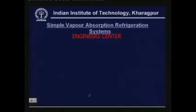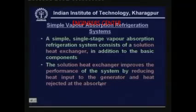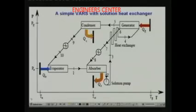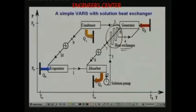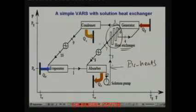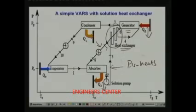A simple single-stage vapor absorption refrigeration system consists of a solution heat exchanger in addition to the basic components. The solution heat exchanger improves performance by reducing heat input to the generator and heat rejected at the absorber. This extra component preheats the solution going to the generator by using the heat of the solution coming from the generator, creating a heat exchange between the hot solution leaving the generator and the cold solution entering it. As a result, Q_G and Q_absorber are both reduced.